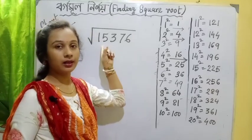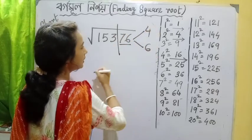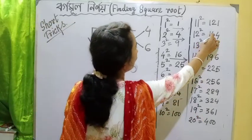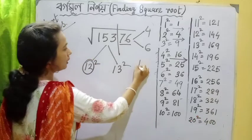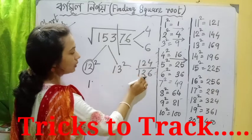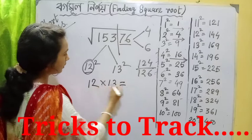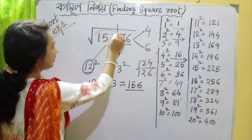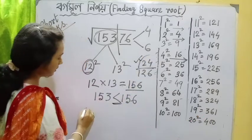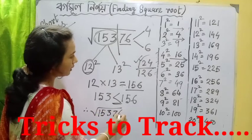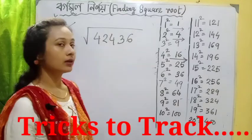Here is a 5-digit number: 15376. 12 into next number 13 is 156. The number here is 153, which is less than 156. So less than — we choose the lesser number. 15376 is equal to 124.